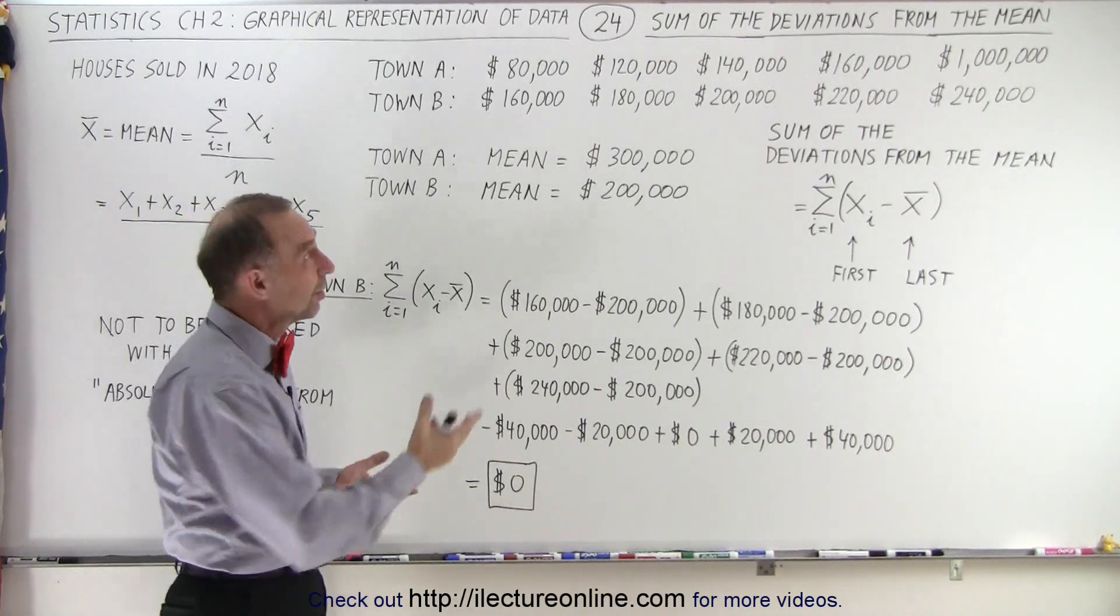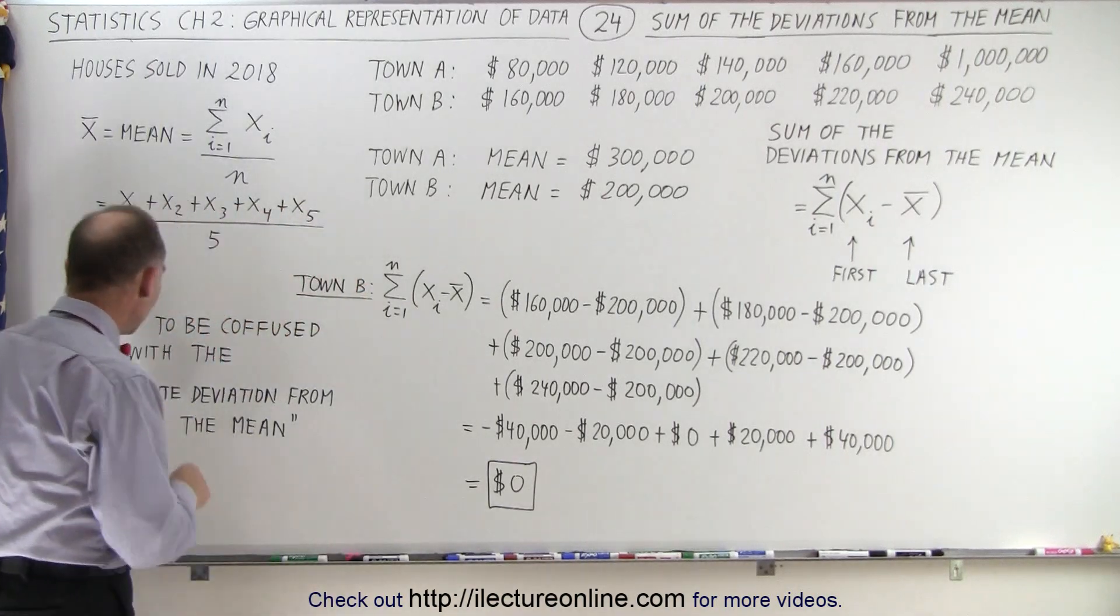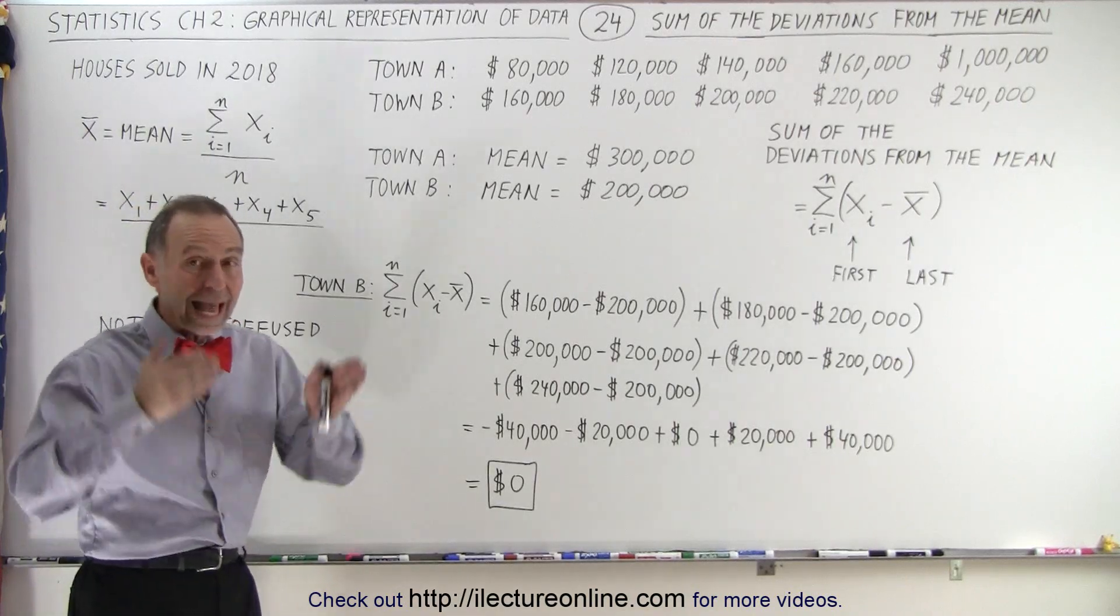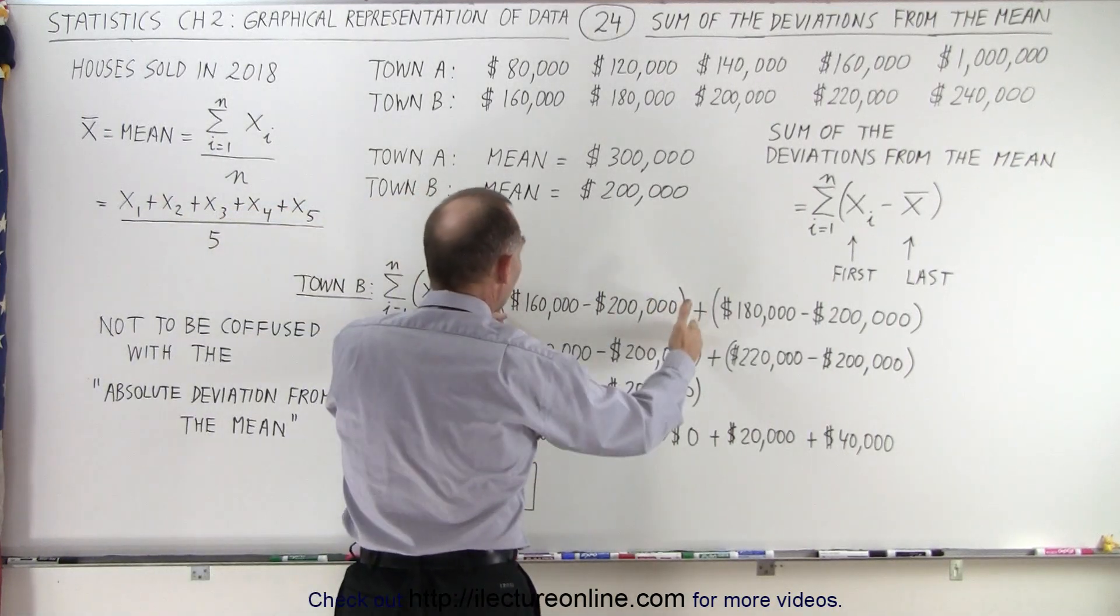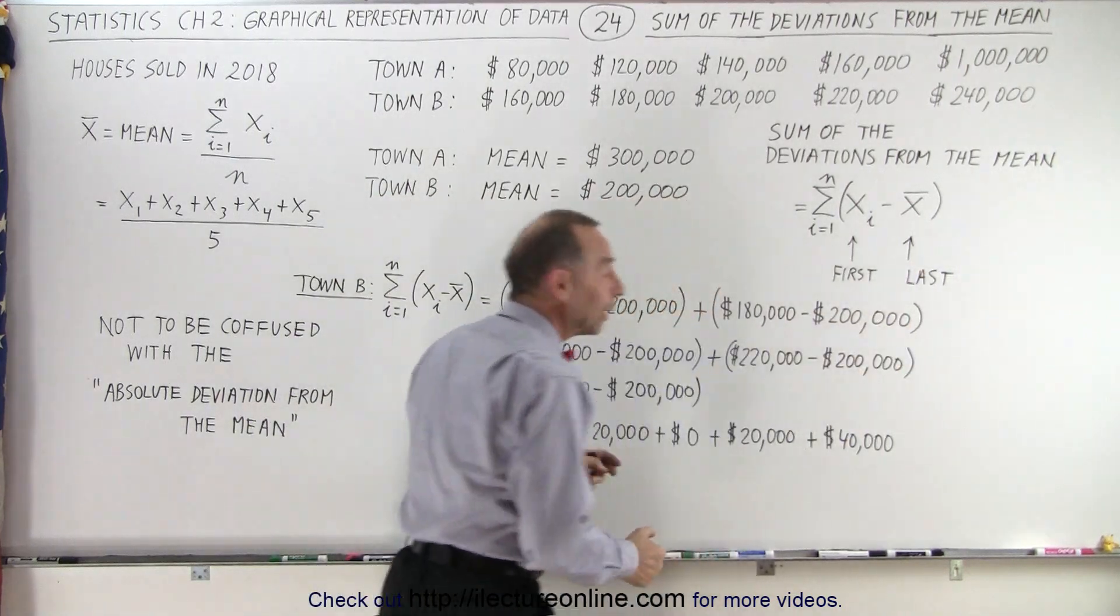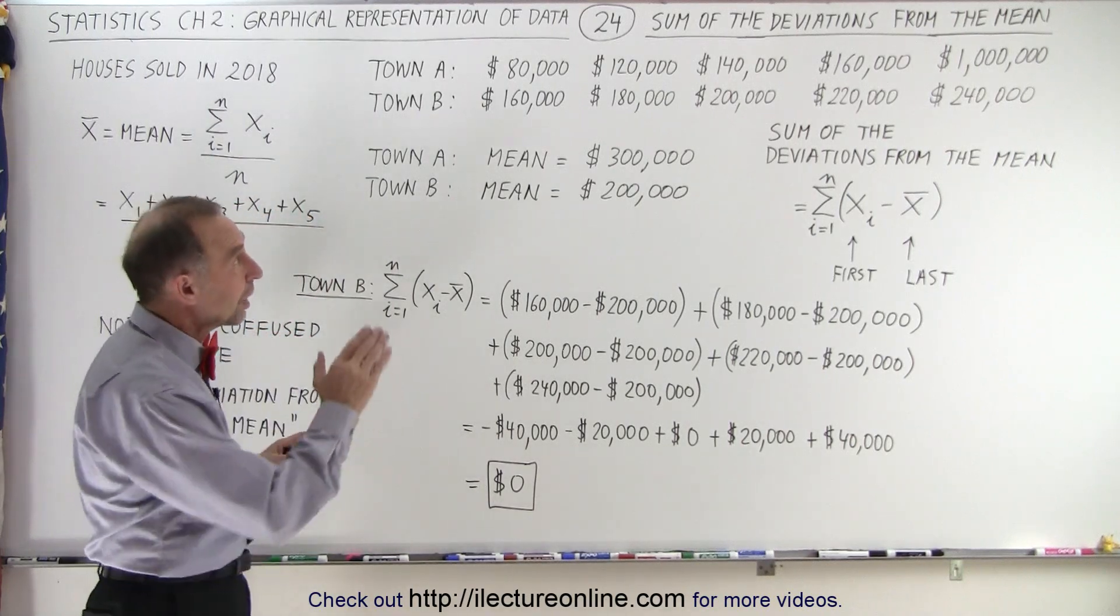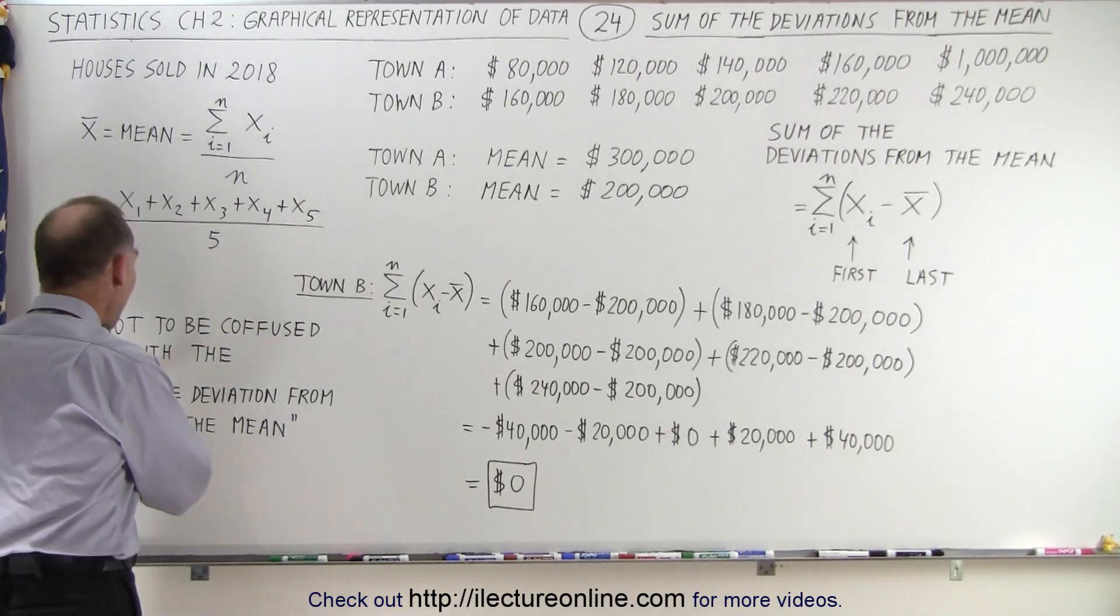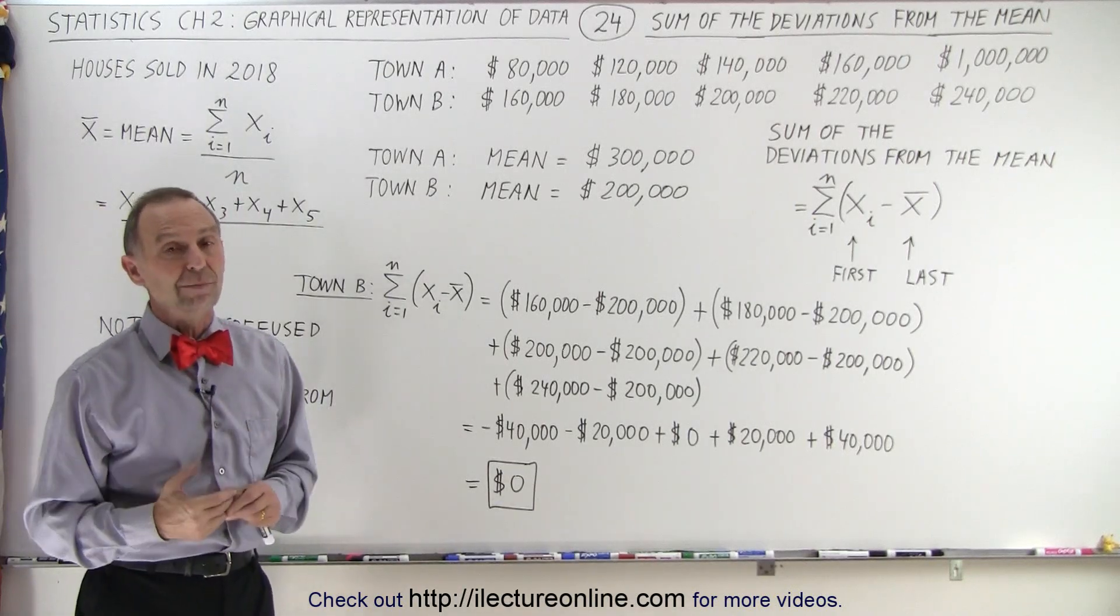Well we actually don't use the sum of the deviations from the mean. What we do instead is we look for the absolute deviation from the mean and sum those up. So what we mean by the absolute is that we take the absolute value of that. So if we take the absolute value of this difference we get a positive $40,000 not negative $40,000. If we take the absolute value of this we get a positive $20,000 not a negative $20,000. So we need to be careful, we're not really wanting to sum up the deviations from the mean, we want to sum up the absolute deviation from the mean and then we get a meaningful value.